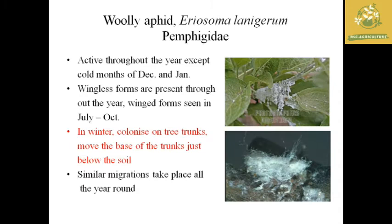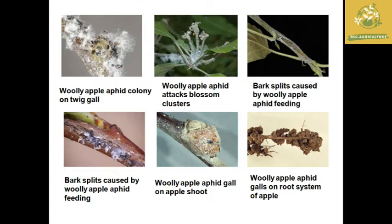The first pest I am going to discuss in apple is the woolly aphid, where the scientific name is Eriosoma lanigerum. This pest mainly attacks during the months of December and January, mainly due to the cold conditions. They have a wingless form present throughout the year, and winged forms can be seen in July and October when migration and transmission mainly occur.